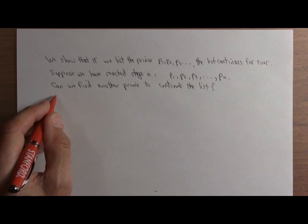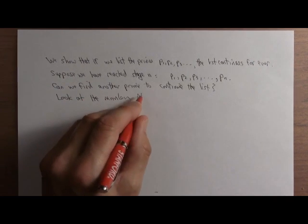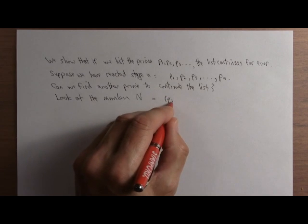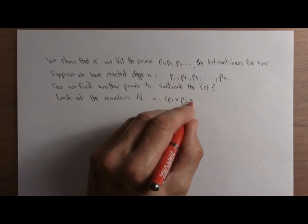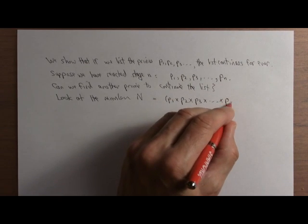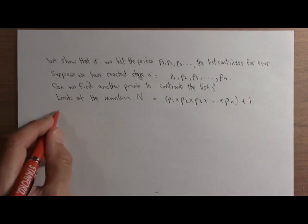Here's a clever trick that Euclid described in his famous book Elements in 350 BC. Look at the number N defined as follows: Set N equal to p1 times p2 times p3, all the way up to pn, multiply them all together, and add 1.